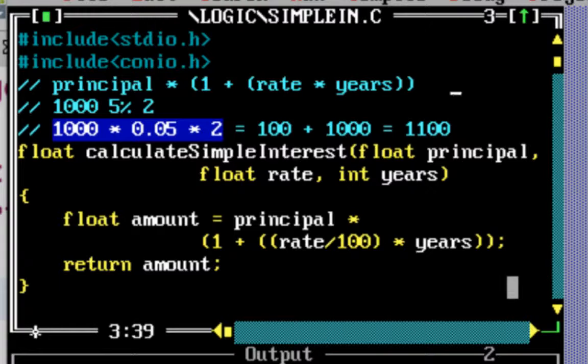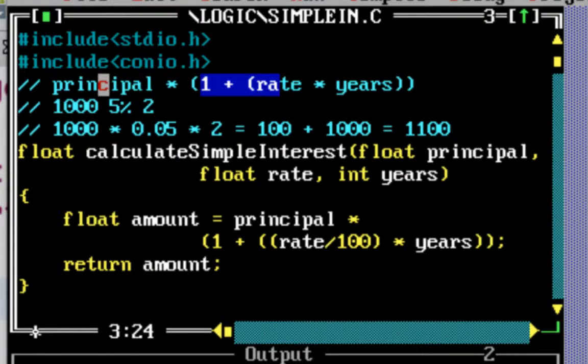If you look at what we have done, the entire calculation can be simplified into this formula: principle multiplied by 1 plus rate into years. So rate into years, one plus rate into years, gives me the multiplication component which I have to multiply the principle with.